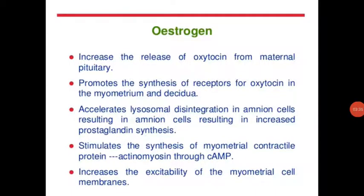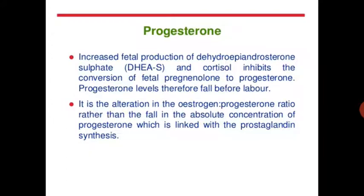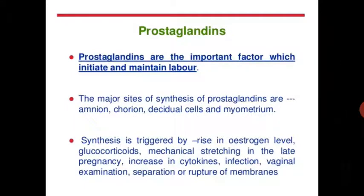Estrogen increases the release of oxytocin from the maternal pituitary, promotes synthesis of oxytocin receptors in the myometrium and decidua, accelerates lysosomal disintegration in amniotic cells resulting in increased prostaglandin synthesis, and stimulates the synthesis of myometrial contractile protein. Progesterone increases fetal production of dehydroepiandrosterone sulfate and cortisol, and inhibits the conversion of fetal androstenedione to progesterone. Progesterone levels therefore fall before labor.